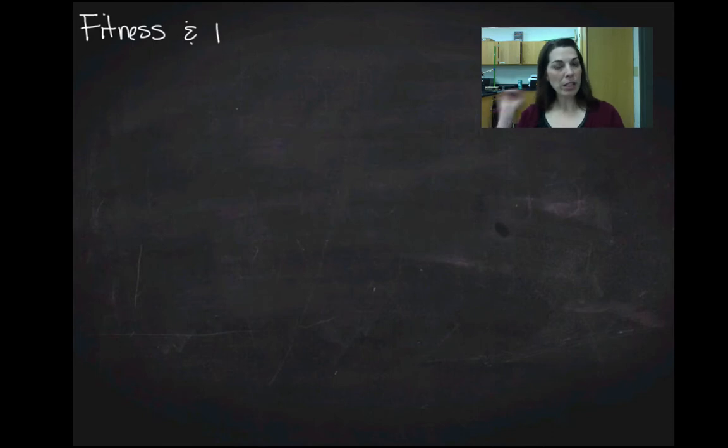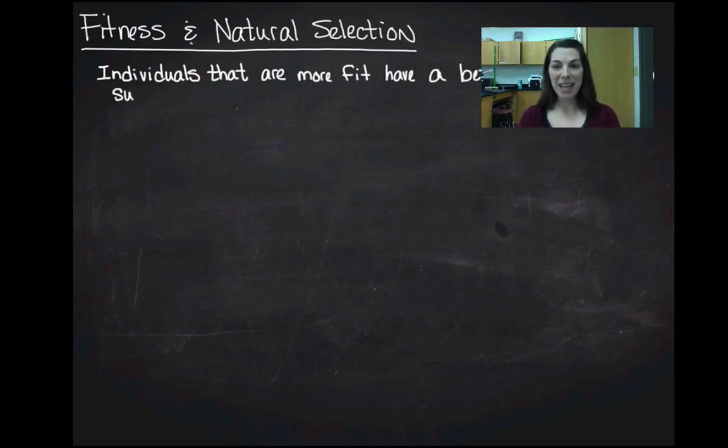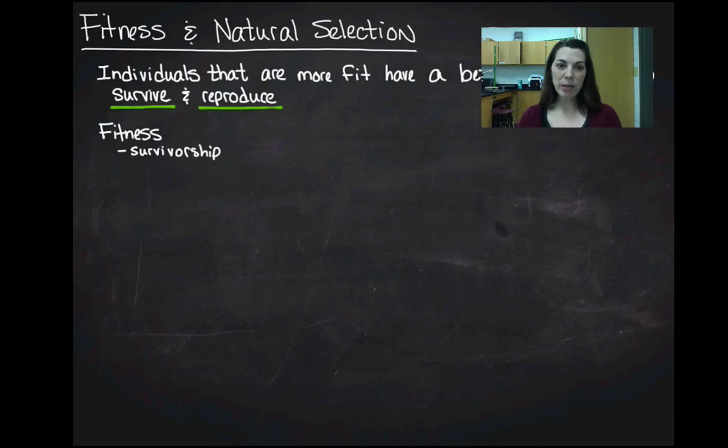So we need to talk about fitness and how fitness relates to natural selection. Fitness, you guys hear all the time survival of the fittest, and what that actually means is that individuals that are more fit are going to have a better potential to survive and thus reproduce in their ecosystem. Because if you don't survive then you can't reproduce, and that's what we really mean by fitness. The fitness of an organism is its ability to survive and reproduce in its ecosystem. So fitness is survivorship and it is also fecundity, which is just a measure of its reproductive success.